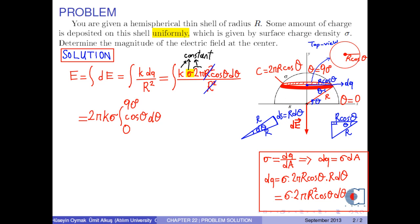The integral of cosine theta is sine theta. So, we get 2 pi k times sigma times sine theta between the 0 and 90 degrees.